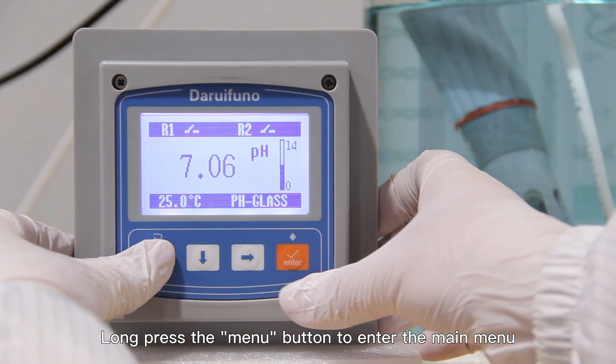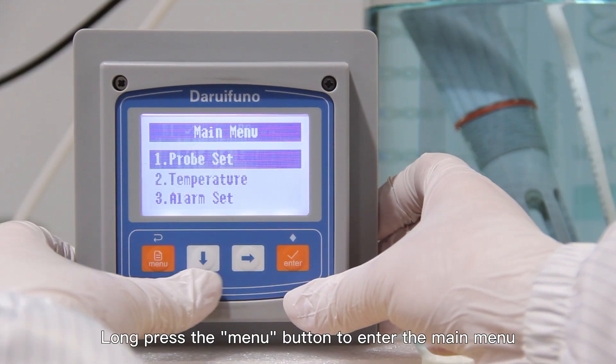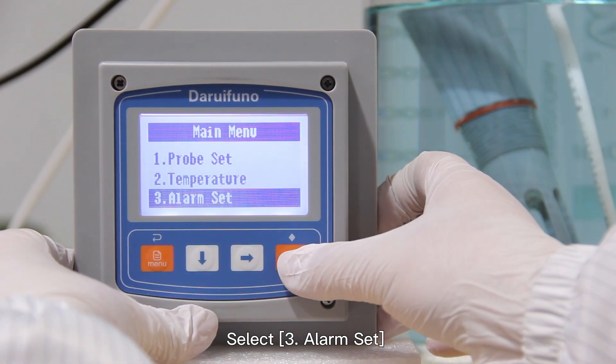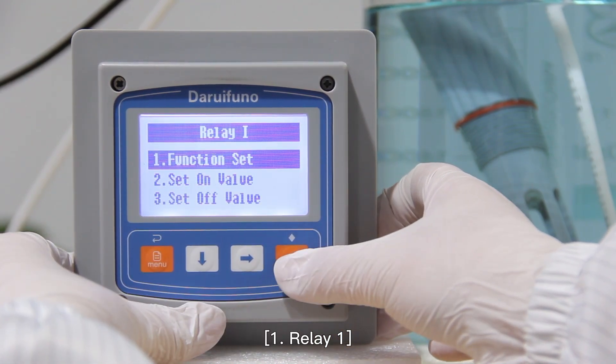Power up the meter. Long press the menu button to enter the main menu. Select 3, Alarm set, then 1, Relay 1.